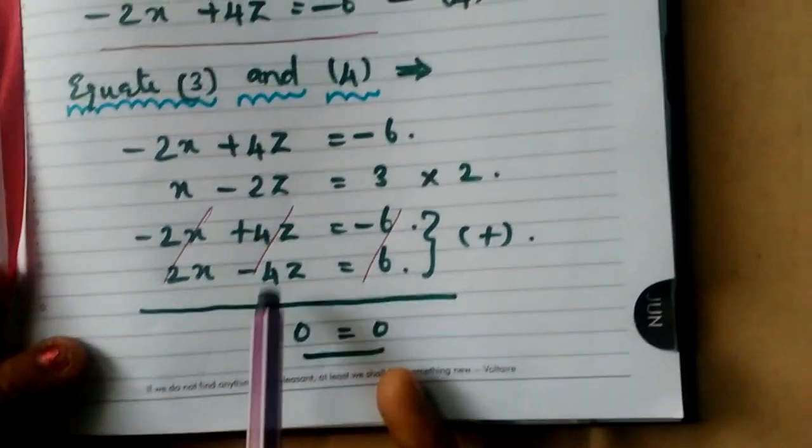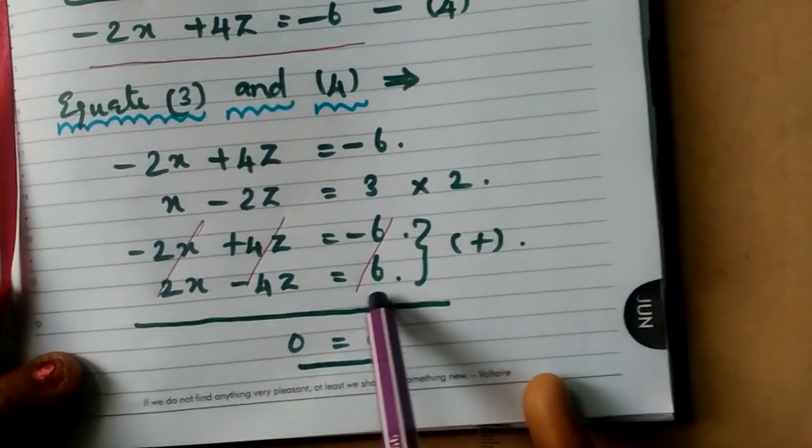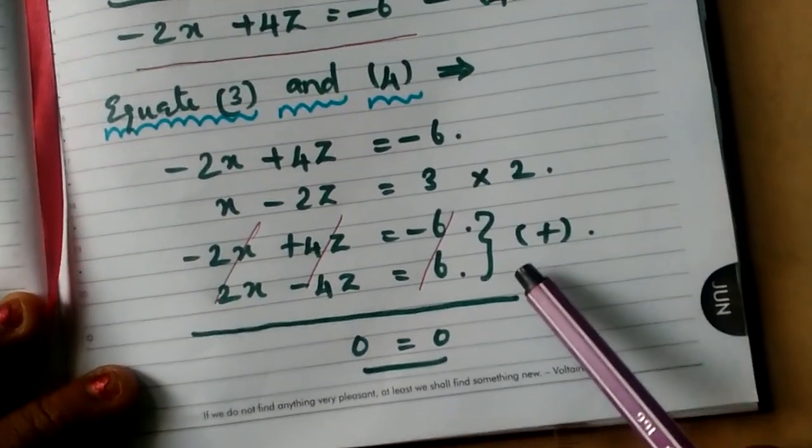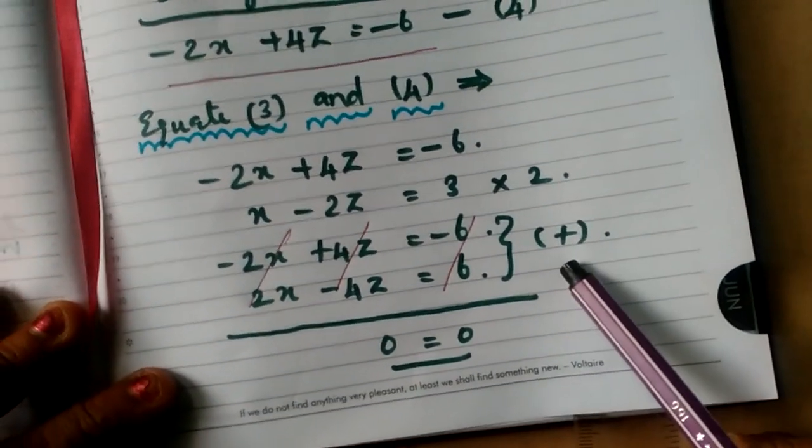Minus 2X plus 2X cancel. Plus 4Z minus 4Z cancel. Minus 6 plus 6. So we are going to add the two equations simultaneously. Right, you must assume the symbols, children. Then only, plus means you do not want to suppose to change the symbol under the equation.